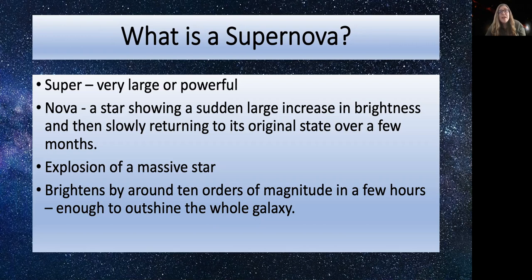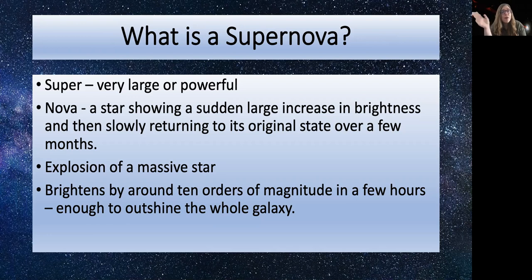Supernovae were visible long enough to make parallax observations possible. Parallax observations use the movement of an object on the sky to determine its distance. Objects close to us like planets move across the sky and we can take parallax measurements, but very far-away stars or galaxies don't move much. From supernovae, astronomers learned these objects must be further away than the moon or the planets — they are very distant objects.